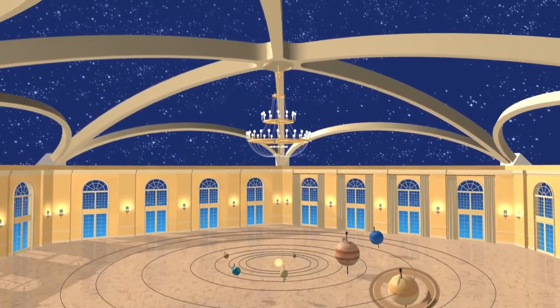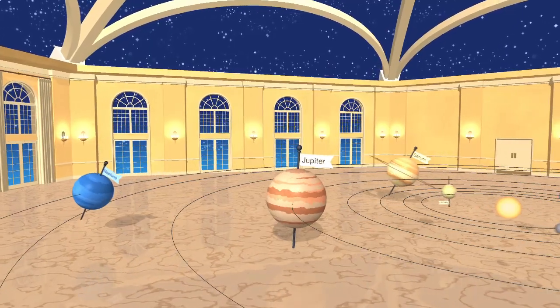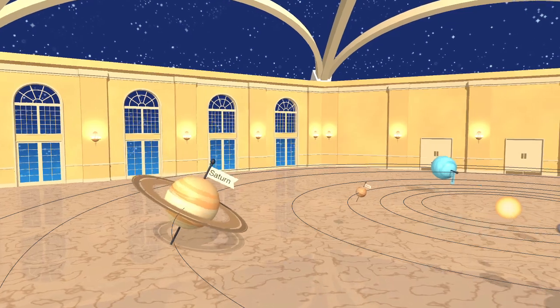Imagine our solar system as a dance floor. The planets are moving to pretty much the same rhythm. But one of them is doing the side shuffle.